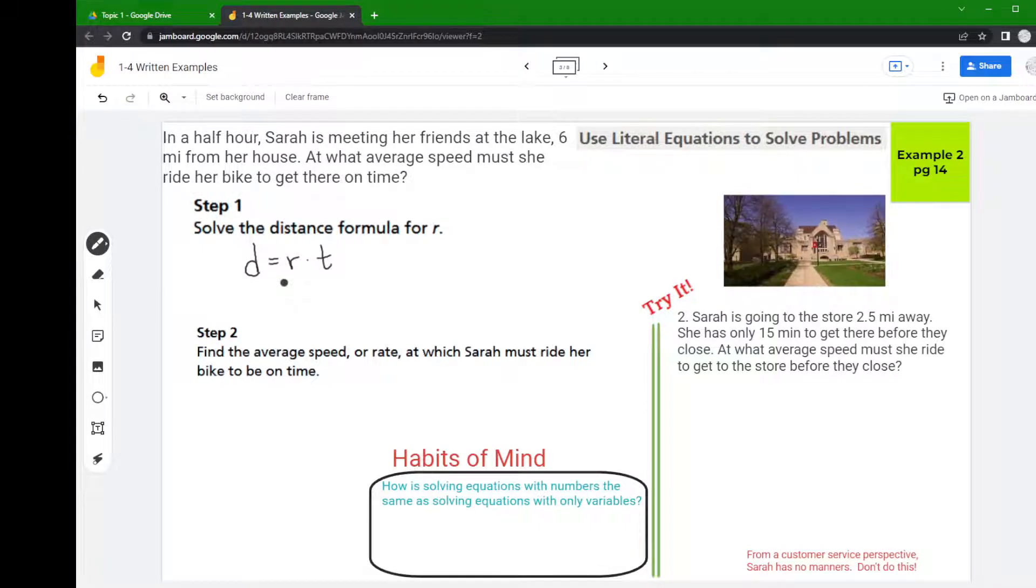We're going to isolate the letter R there, and then what we're going to do is plug in the variables that we know in order to figure out what that rate would be.